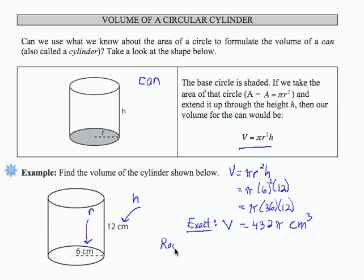And then let's go for the rounded form, and to do that, we're going to substitute 3.14 in place of pi. If we perform that multiplication, we obtain 1356.48.